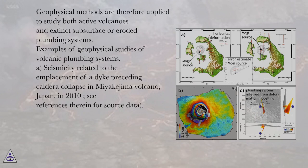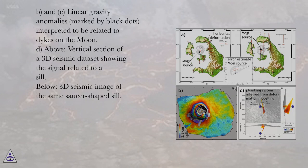Examples of geophysical studies of volcanic plumbing systems: (a) Seismicity related to the emplacement of a dike preceding caldera collapse in Miyakejima Volcano, Japan, in 2010. (b) and (c) Linear gravity anomalies, marked by black dots, interpreted to be related to dikes on the moon.